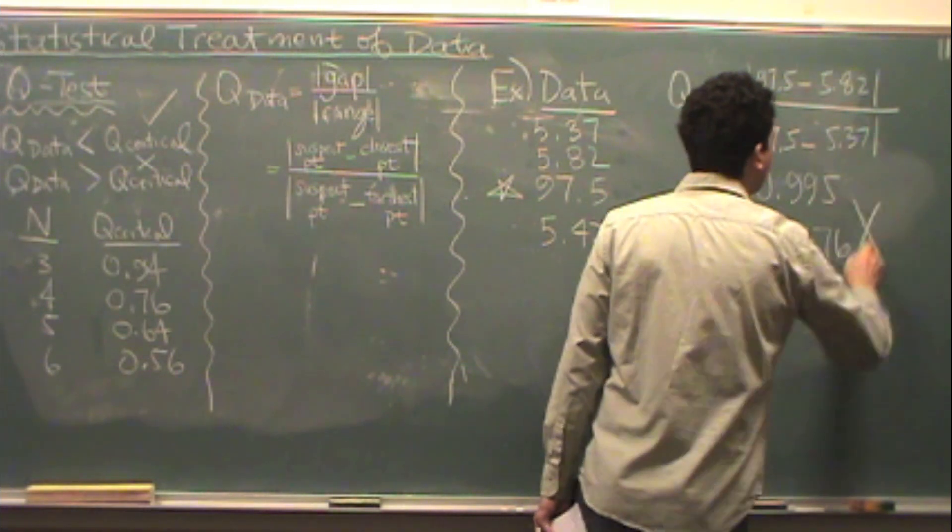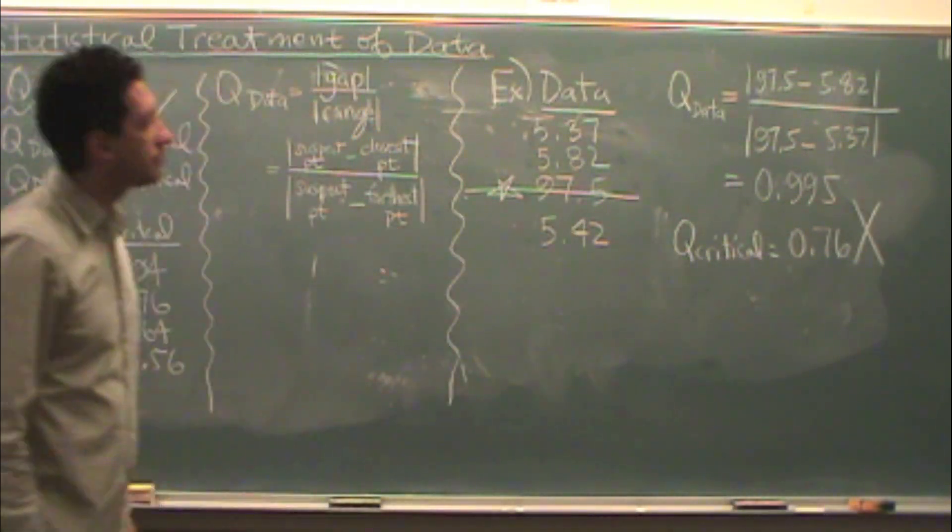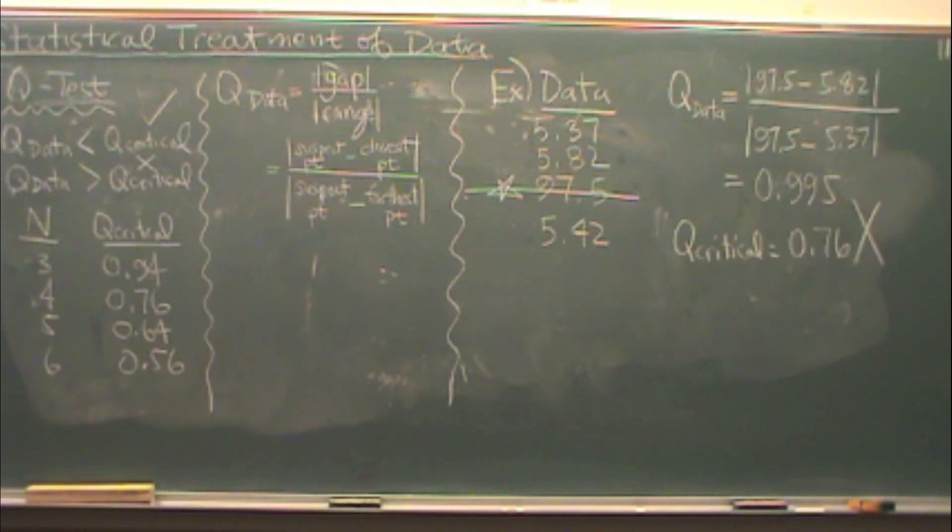So it is no good. Garbage. I'm going to line that out because the Q test tells you that your hunches were right. Your suspect point is actually not a quality point.